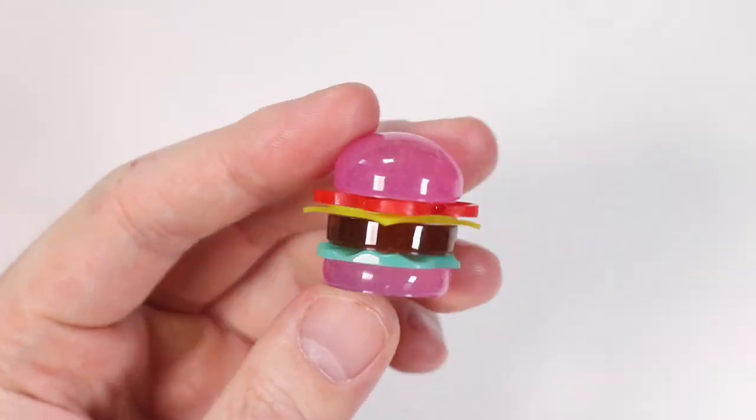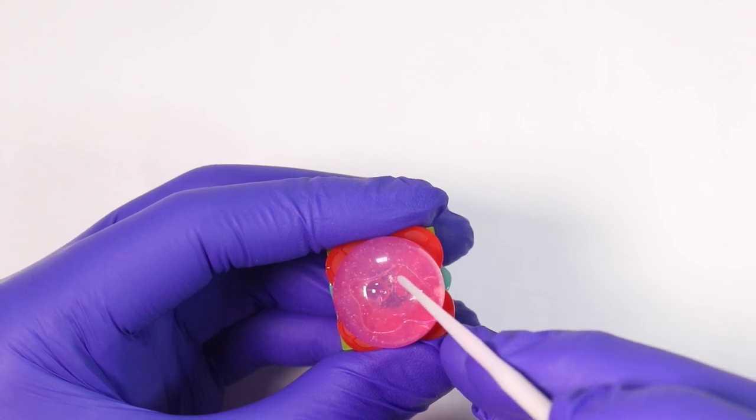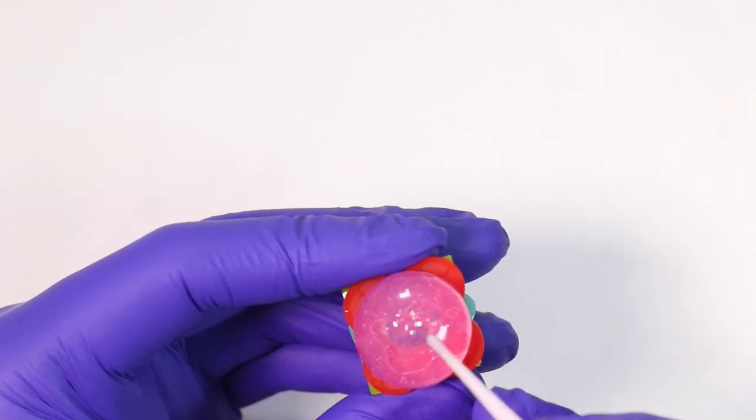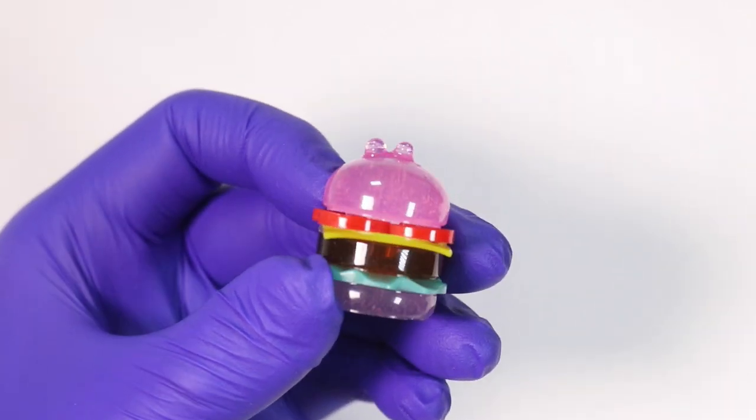Now to give it some animal features, I'm going to take the same pink resin and add two little dots and cure them on top. This will be for the bunny ears. And after curing, I'm just going to add layer on layer until we have two little lumps for the ears.